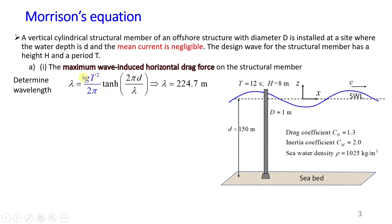I want to highlight that in blue I show the equation for calculating the wavelength for deep water waves. This can be calculated using a simplified equation to check if you have a deep wave case, or you can just calculate lambda using the full equation. My lambda is approximately 225 meters.